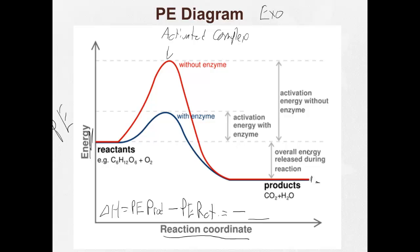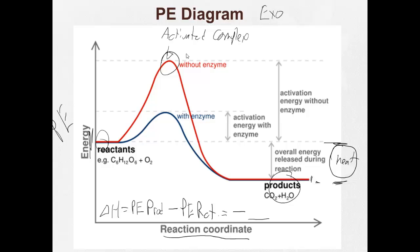If you think about it, here's the energy of the reactants up at this level, and here's the energy of the products. Where did this energy go? It was given off as heat. So we have the potential energy of the reactants, potential energy of the products, and the activated complex.